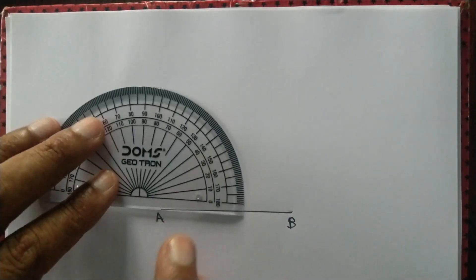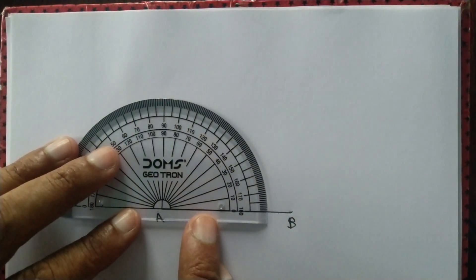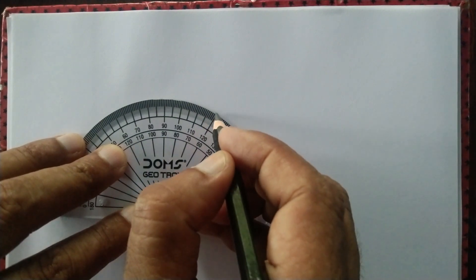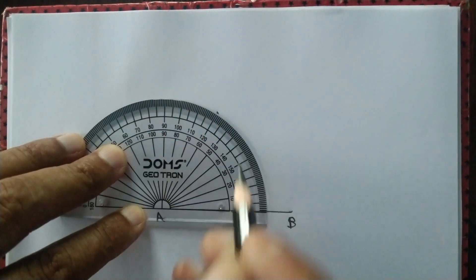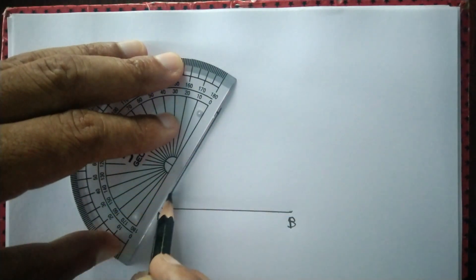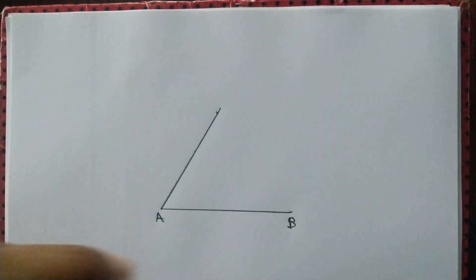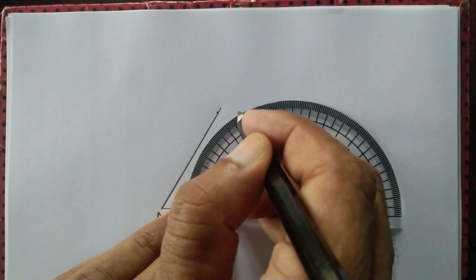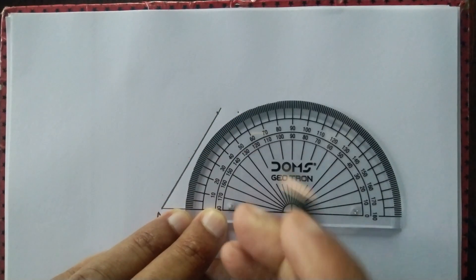Now we draw angle A that measures 60 degrees using the protractor. We draw angle B that measures 60 degrees, again using the protractor.